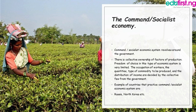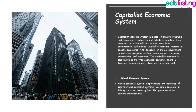Another type of economic system is the capitalist economic system. It is based on private ownership and there is freedom for individuals to practice economic activity without interference or hindrance from governmental authority. The capitalist economic system is greatly associated with freedom of choice, and the government does not have excessive control over consumers, businesses, commodities, or resources.